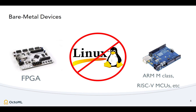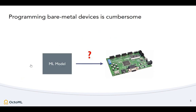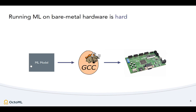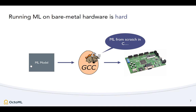Let's try to unpack this. By bare metal, I mean just not running Linux — so we're talking about soft IP on FPGA, ARM M-class, or RISC-V MCUs. Take this simple example: we want to run an ML model on some embedded device. Well, there's a GCC compiler for this device, so we end up writing an ML framework implementation from scratch. I've talked to people in the audience — a lot of you have done this. It's not where we want to be as a field.